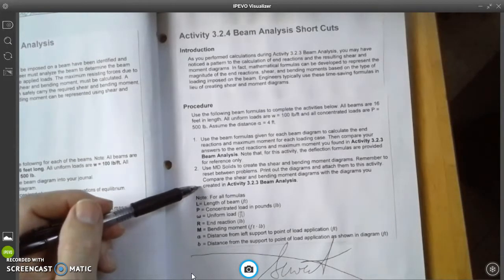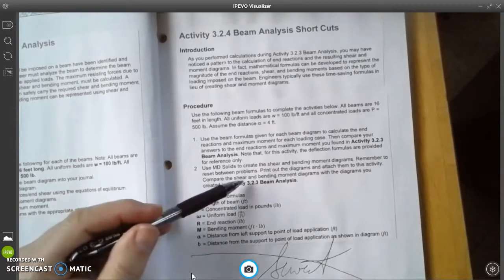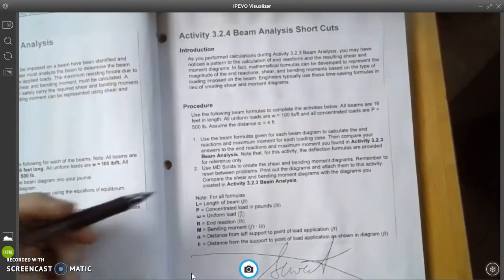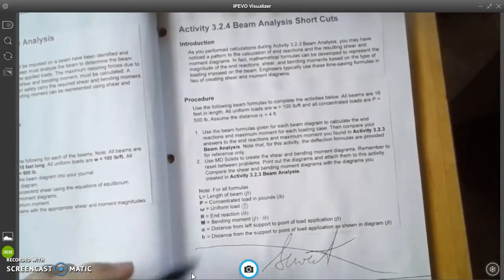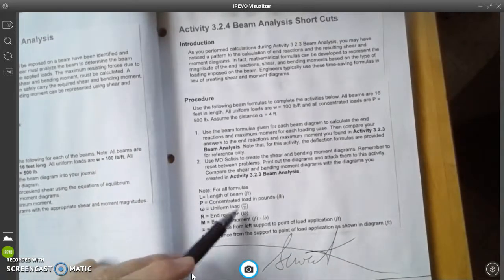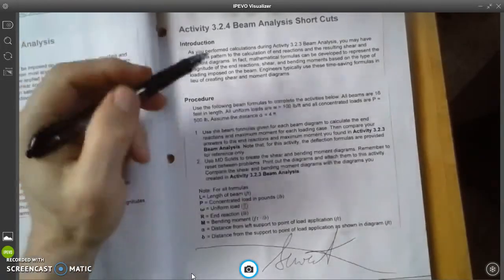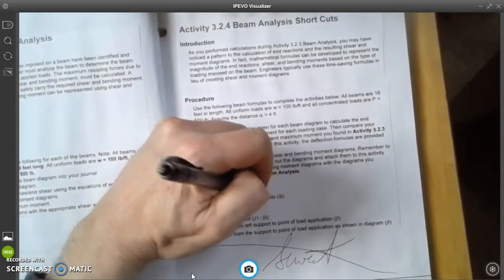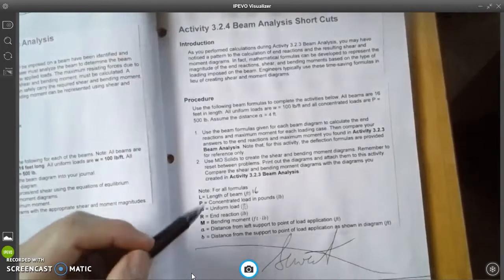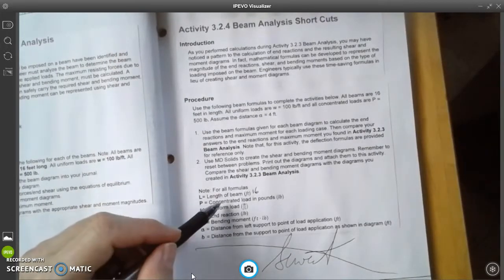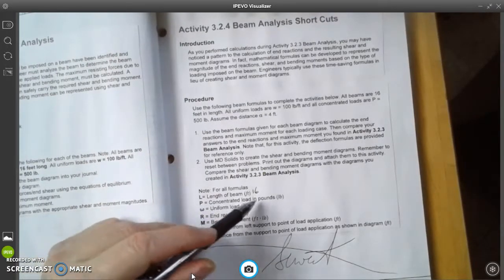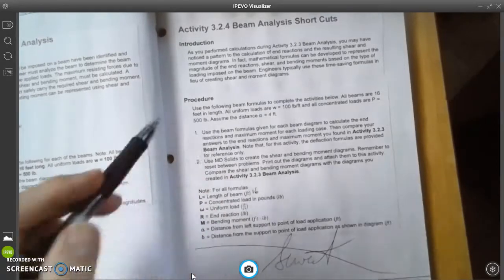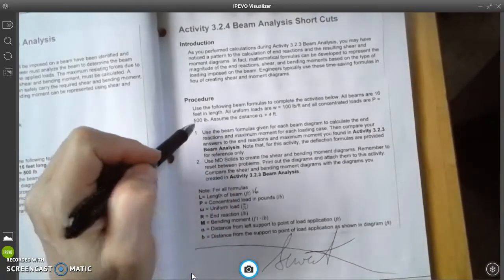With the diagrams you created in Activity 3.2.3 Beam Analysis. And for all our formulas, L equals length, and that is going to be, according to what was told to us up here, that is going to be 16 feet. P is the concentrated load in pounds, and that was p equals 500.